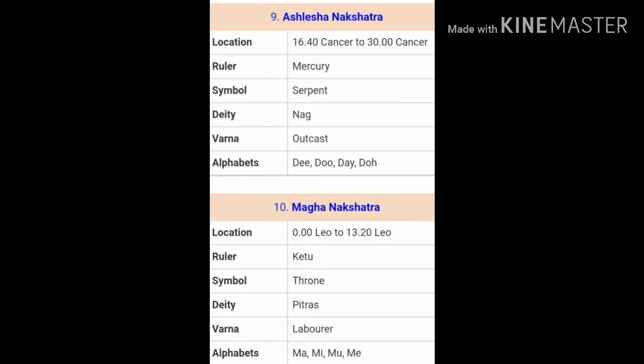The ninth Nakshatra is Aslesha Nakshatra. Aslesha means to embrace or coil around someone like a snake, and is ruled over by Mercury or Buddha. People of Aslesha Nakshatra are very sharp. They emit venom like snakes when they talk, so you have to be very careful when talking to them as they can get easily offended. Because Aslesha is represented by a snake, these people tend to have similar characteristics — their words can be very poisonous and may easily hurt the person in front of them. Aslesha Nakshatra people are very beautiful to look at, and you may get easily attracted to them, but you need to understand their nature and be careful.